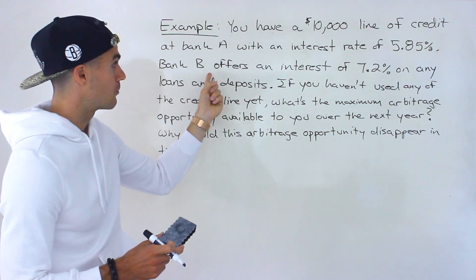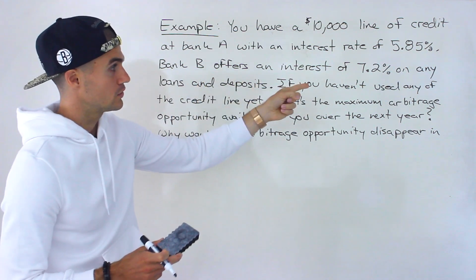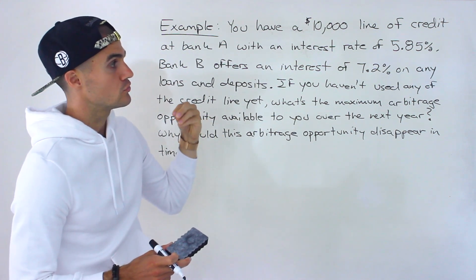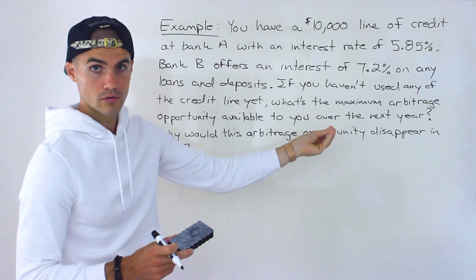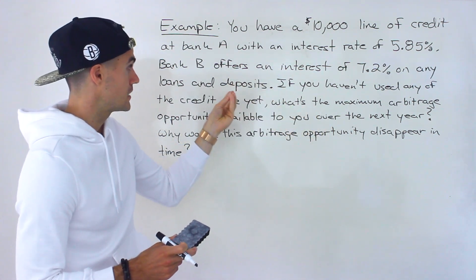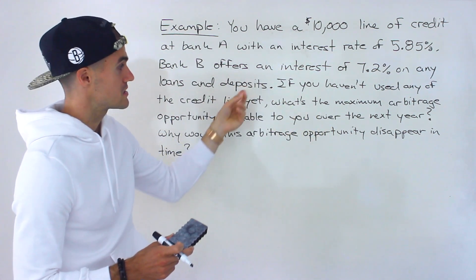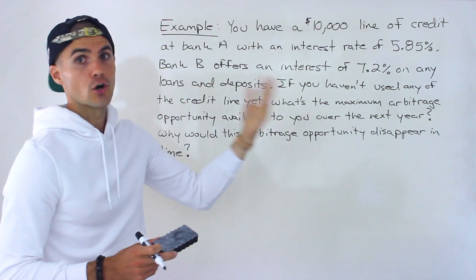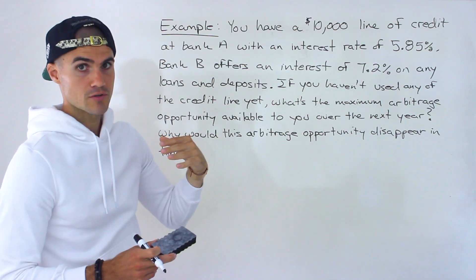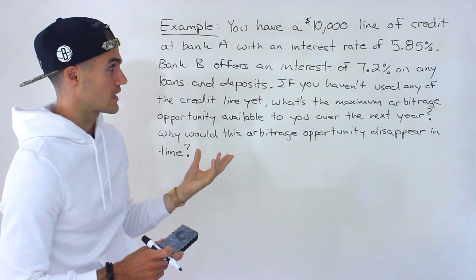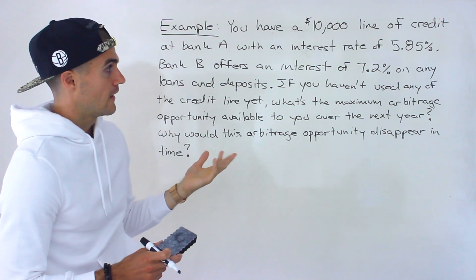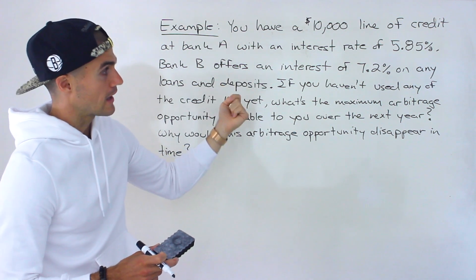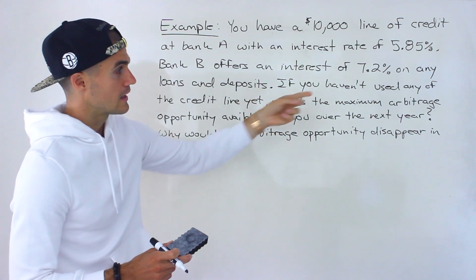If you borrow from Bank B, you're going to be charged 7.2%. But if you deposit money to Bank B, you're going to earn 7.2% on that savings account. So obviously what you want to do is borrow from Bank A — your line of credit — and then invest or deposit in Bank B.